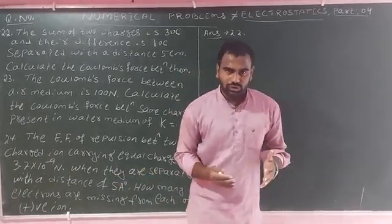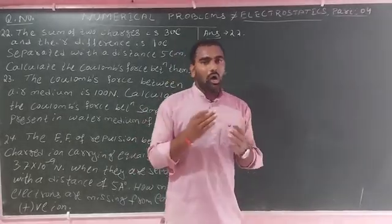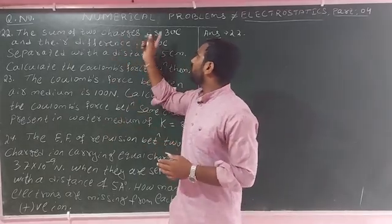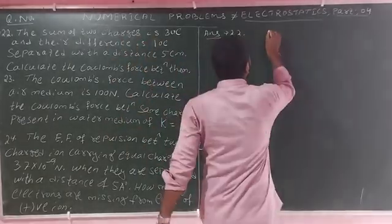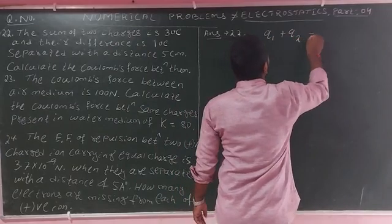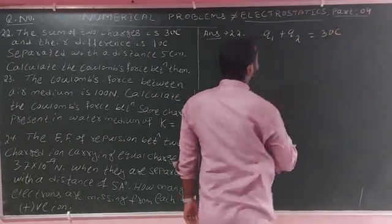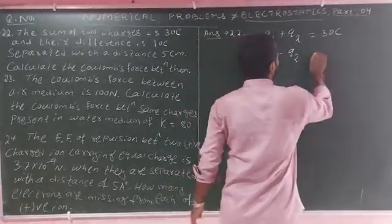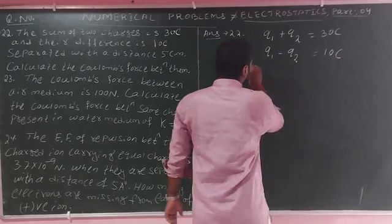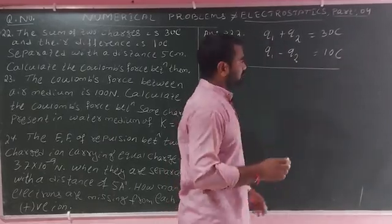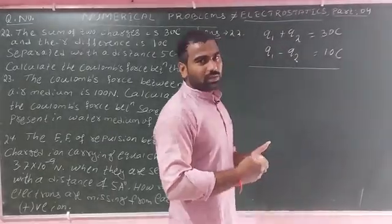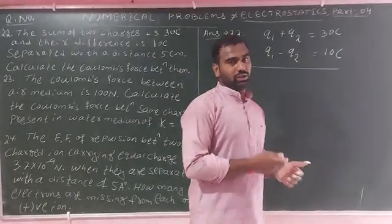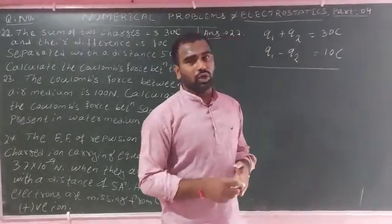Let the two charges be Q1 and Q2. According to the question, the sum is Q1 plus Q2, and the difference is Q1 minus Q2, where Q1 is greater. We will solve this by adding the two equations to find Q1 and Q2.